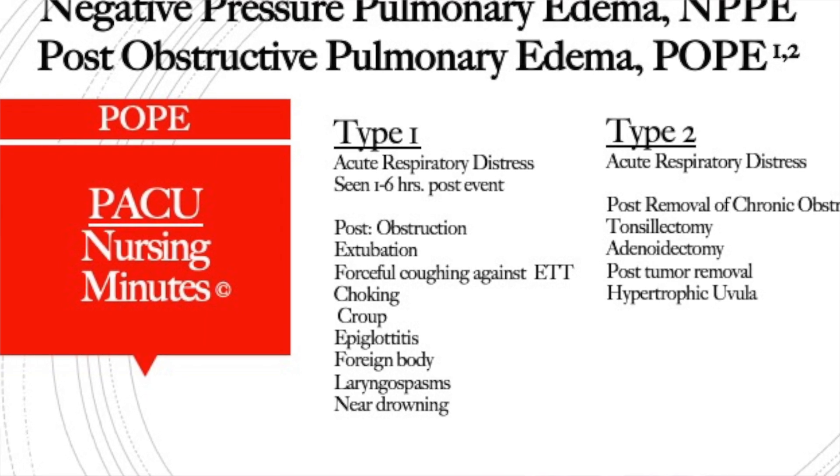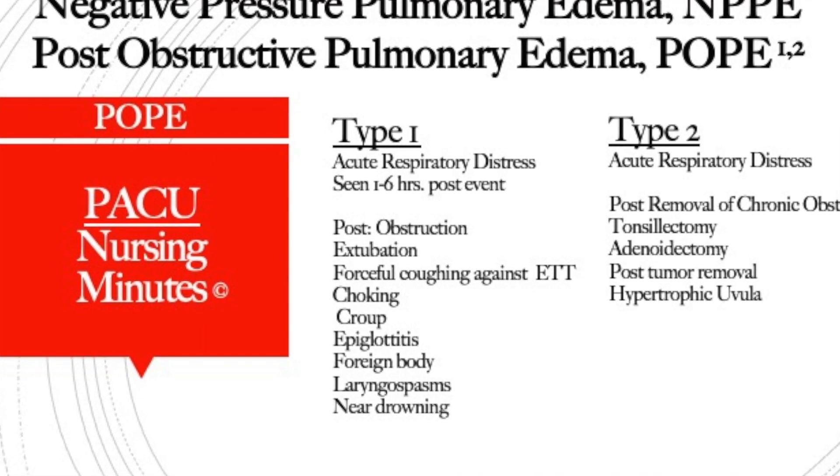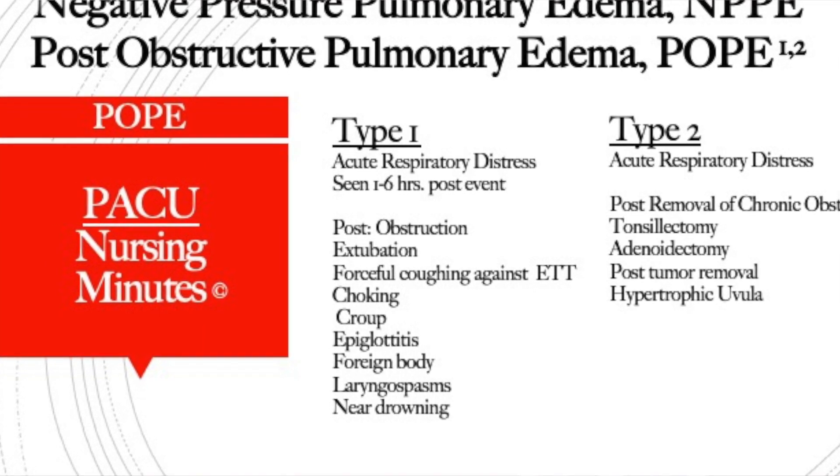Other causes of Type 1 can be choking, croup, epiglottitis, foreign body, laryngospasms, or a near drowning. Some of these cases — like the foreign body, the near drowning, croup, and epiglottitis — you may see in the emergency room department.